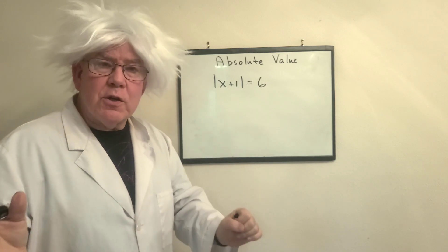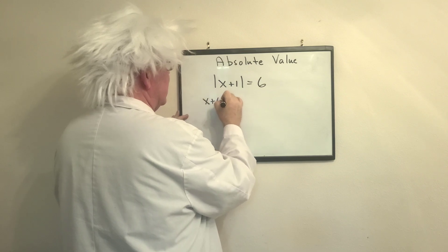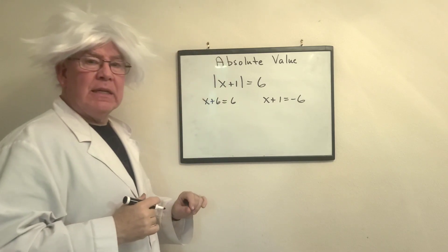So the next thing you're going to do is say, I have two equations. Now, watch carefully. This is going to be x plus 1 equals 6. x plus 1 equals negative 6.